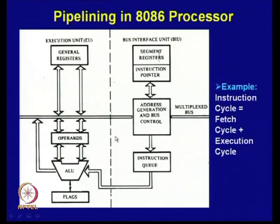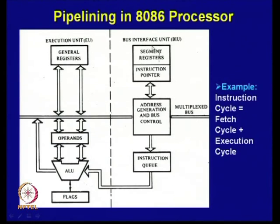Pipelining was introduced with this processor. The bus interface unit accesses memory and fetches instructions — address generation, bus control — all these things are handled by the bus interface unit. There are internal registers like segment registers and the instruction pointer, which are used for generating the effective address.